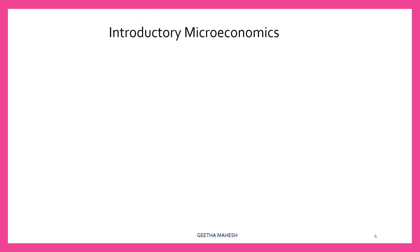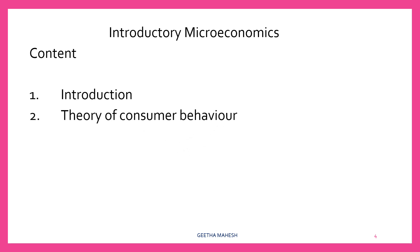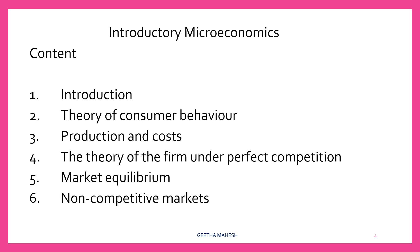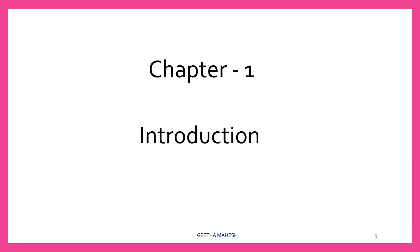Dear students, in introductory microeconomics, we are going to discuss six chapters. The first one is introduction. Second one, theory of consumer behavior. Third one, production and cost. Fourth one, the theory of firm and perfect competition. Fifth, market equilibrium. Then, non-competitive markets. Let us discuss each and every concept in microeconomics according to chapters.